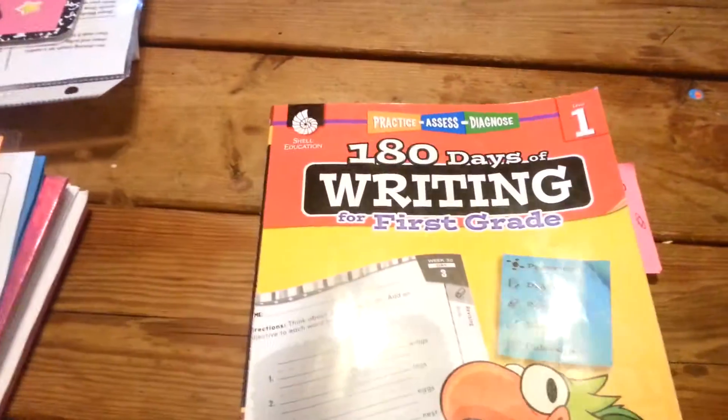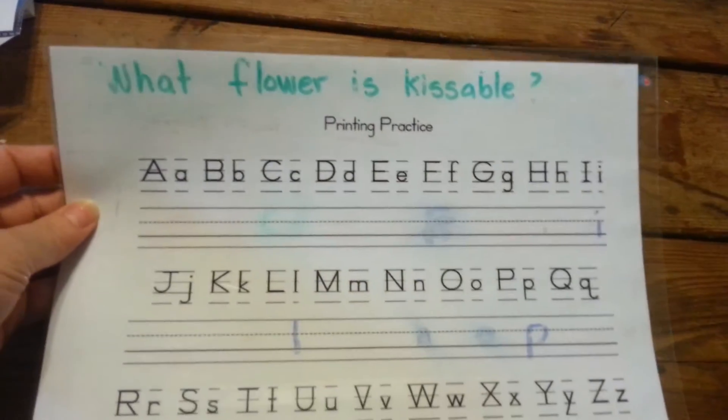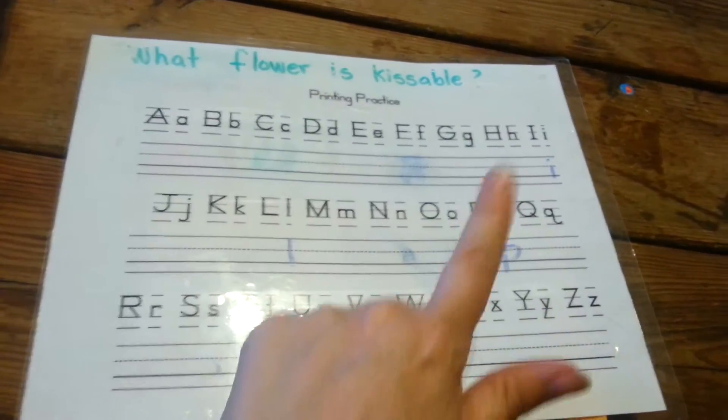And then we go on to writing. For writing, he did a riddle. The riddle was, what flower is kissable? And the answer was tulip. And those are the only letters that he had to write from the word.